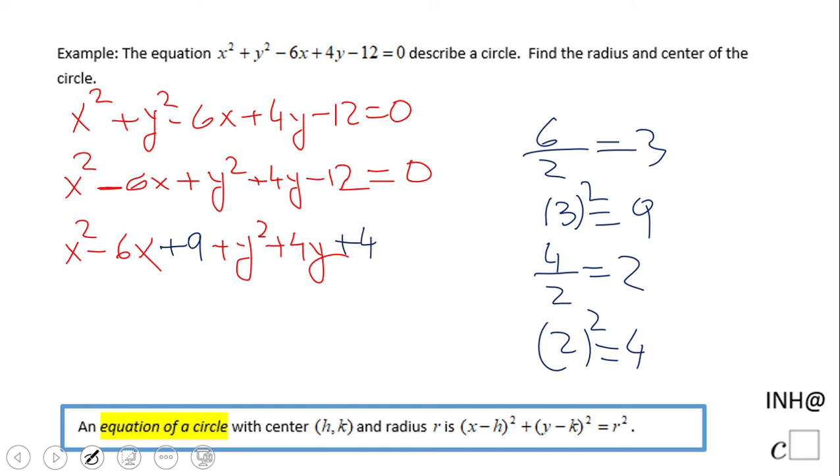Now, we don't have that 9 or 4 in the original equation, so we're going to have to subtract them. And then we're going to put a minus 12 and set it equal to 0.